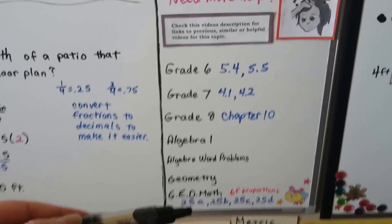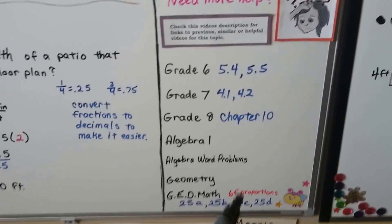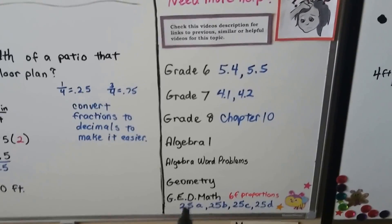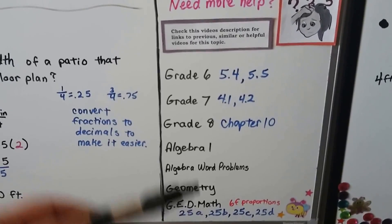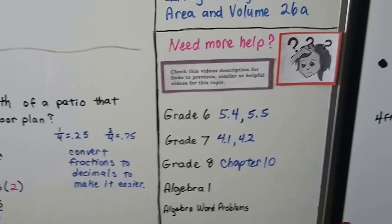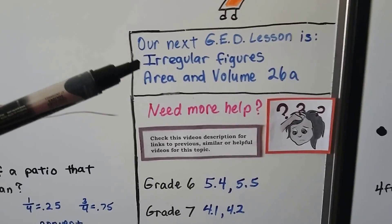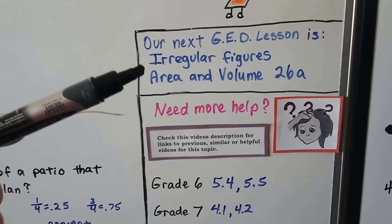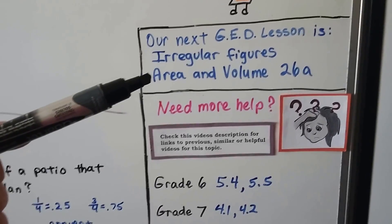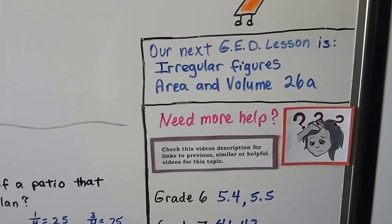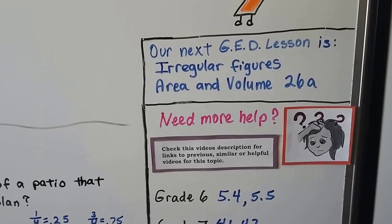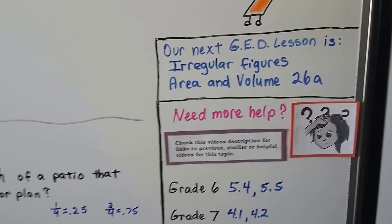If you need more help, there's going to be links to these videos in the description along with that proportions one and the previous videos for lesson 25. And these are helpful, too. They talk about scale drawings and stuff. Our next lesson is 26. We're done with lesson 25. We're going to talk about area and volume of 3D figures that have irregular shapes. So, it's not just a cube anymore. It might be a cube with a triangle on top or something like that.